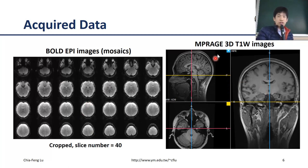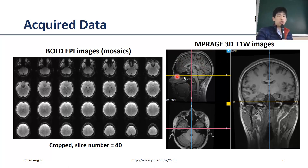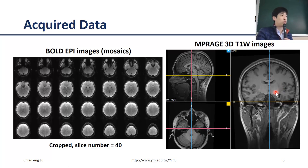We also have 3D T1-weighted images. We acquired this high-resolution structural imaging in sagittal slices, but you can reconstruct it into different views — you can see the axial view and also the coronal view.